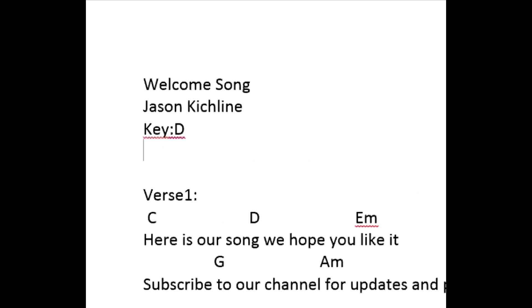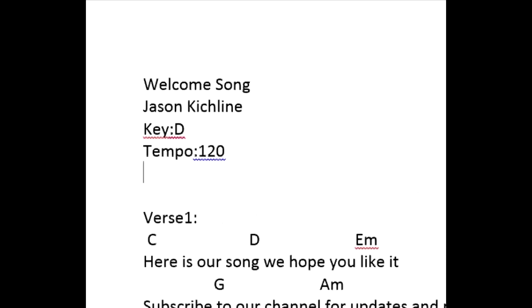Let's make a tempo for this song by writing Tempo, colon, then whatever tempo it is — let's say it's 120. Let's also set up the time signature for this song, which is the numeric beat over the bar. For instance, three-fourths would be written as Time, colon, and then 3/4. After you do this, this is how it will appear in OnSong.